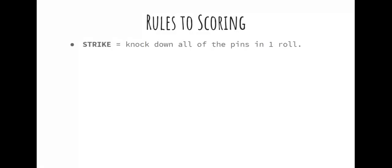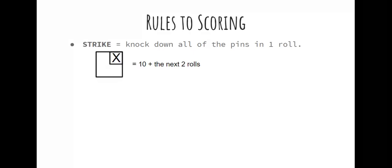Some rules to scoring that we need to know: first, a strike is when you knock down all of the pins in one roll. A strike is scored with an X in the upper right hand corner — that's normally where your second roll goes, but because it's your only roll, that's why it goes there. A strike is equal to 10 plus the next two rolls, because you knock down all 10 pins, then as a bonus you get to add whatever your next two rolls are.